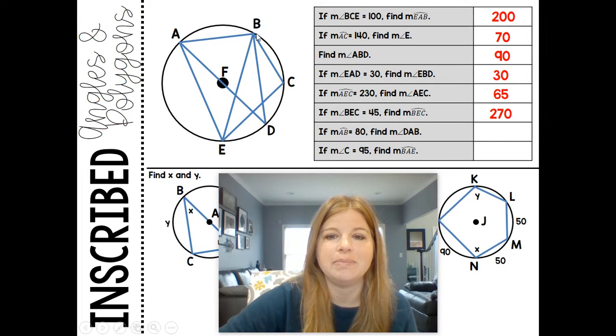If the measure of arc AB is 80, find angle DAB. So if AB is 80, and angle DAB is this inscribed angle opened up to arc BD, and arc AB and BD make a semicircle of 180 degrees. If AB is 80, then arc BD is 100, and its inscribed angle would be half of 100, which is 50.